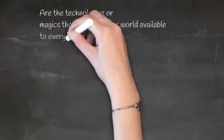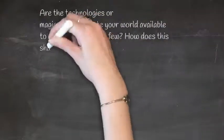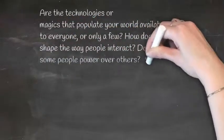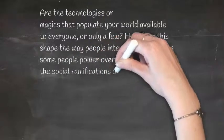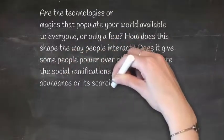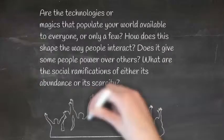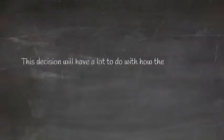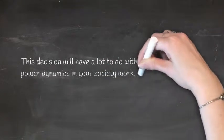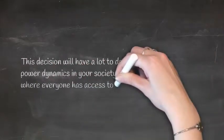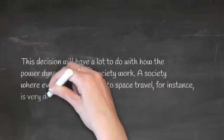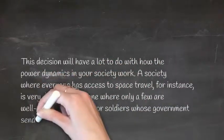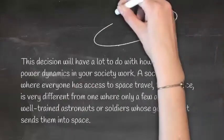Are the technologies or magics that populate your world available to everyone or only a few? How does this shape the way people interact? Does it give some people power over others? What are the social ramifications of either its abundance or its scarcity? This decision will have a lot to do with how the power dynamics in your society work. A society where everyone has access to space travel, for instance, is very different from one where only a few are well-trained astronauts or soldiers whose government sends them into space.